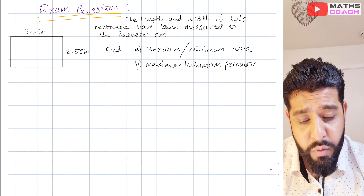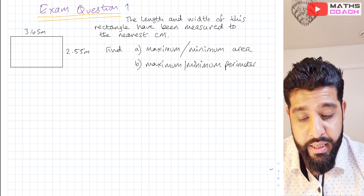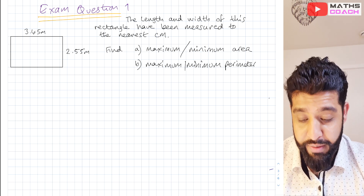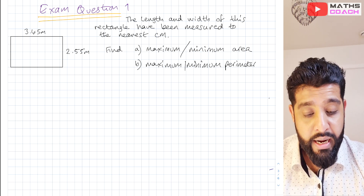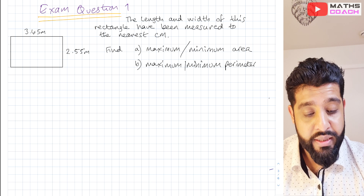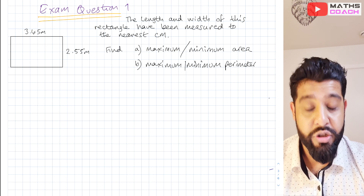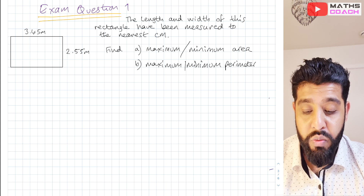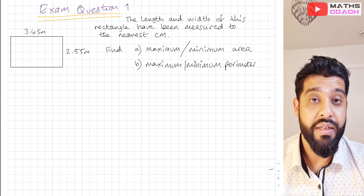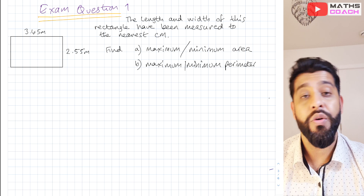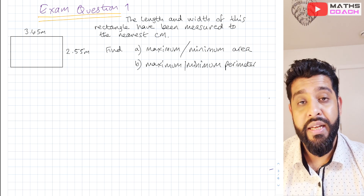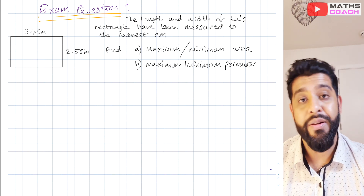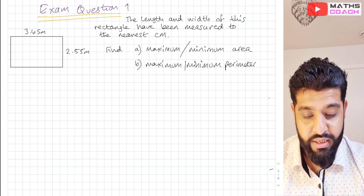The first question I have is a typical exam question where you've been given a shape — in this case a rectangle — and you've been told that the length and width have been measured to the nearest centimetre. Our actual dimensions are given in metres, so we have to convert them into centimetres so that we can find the upper and lower limits, and then convert them back into metres again.